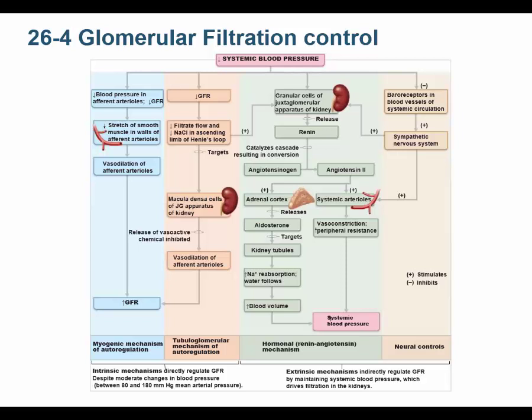This next picture shows the same renin-angiotensin-aldosterone system — with renin and angiotensinogen going directly to angiotensin II. They're simplifying it and skipping angiotensin I, so don't worry too much about that simplification.